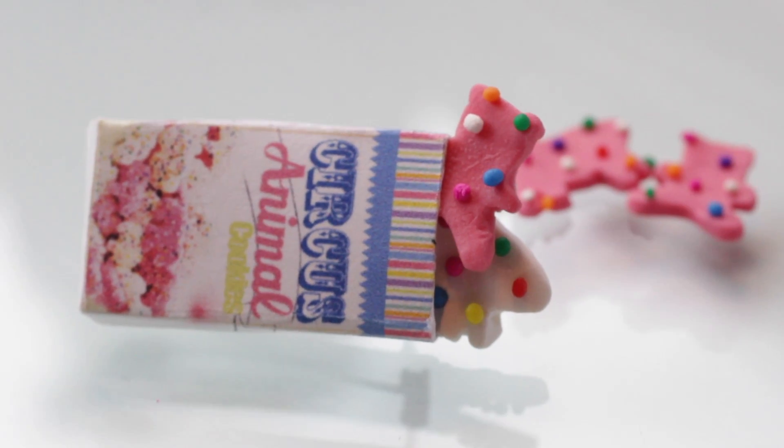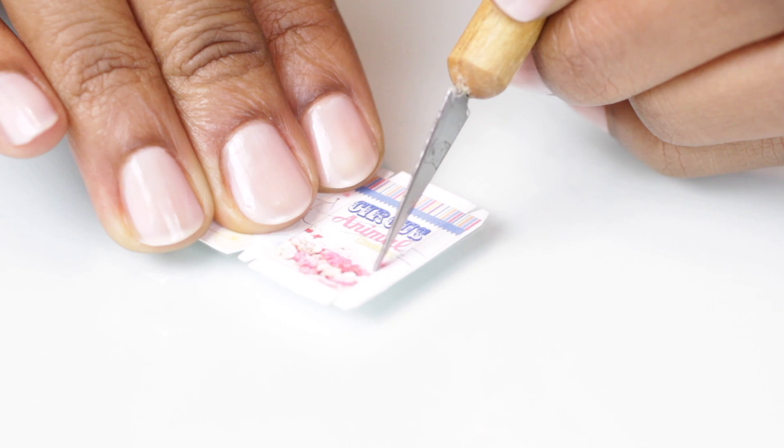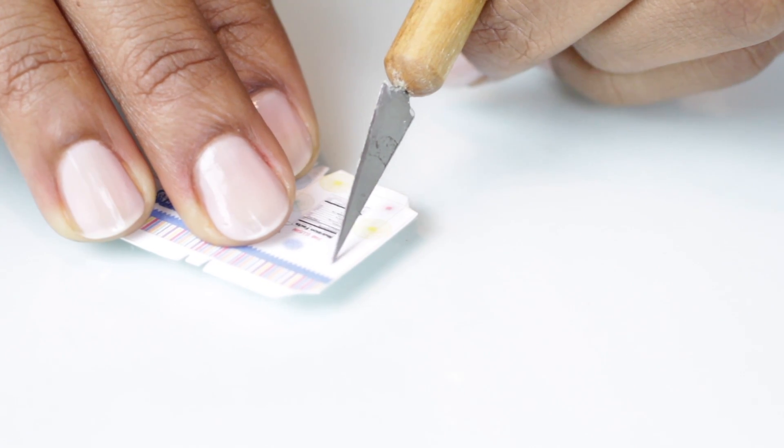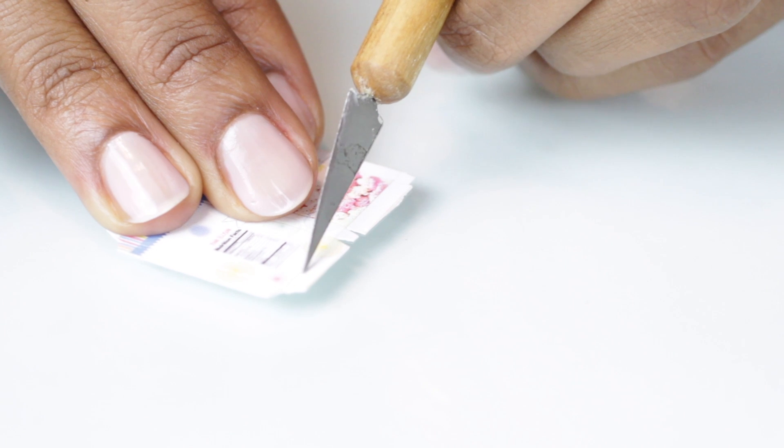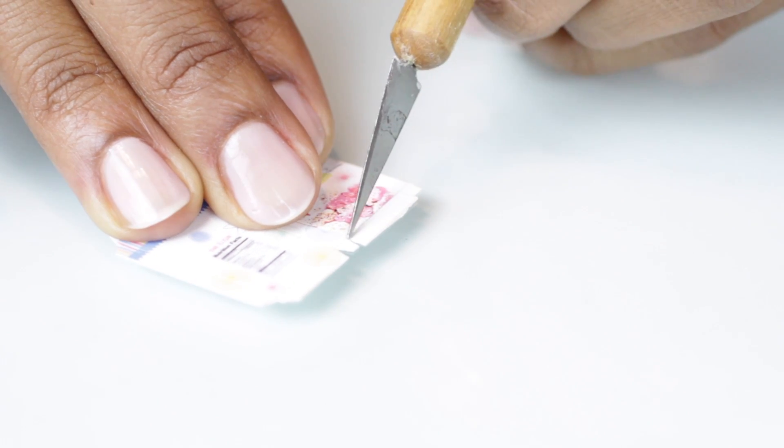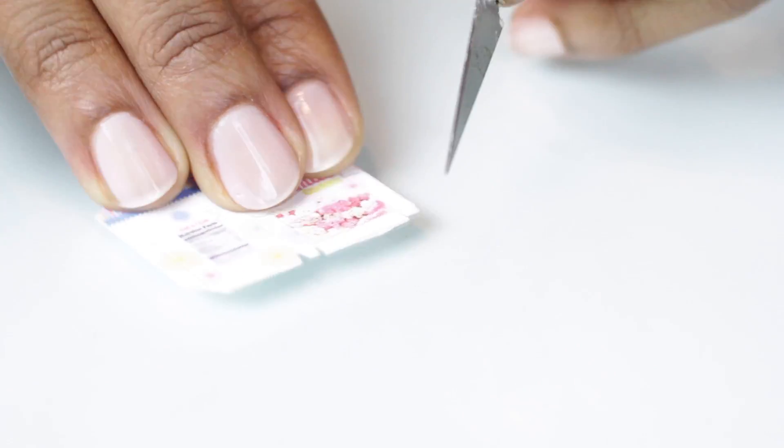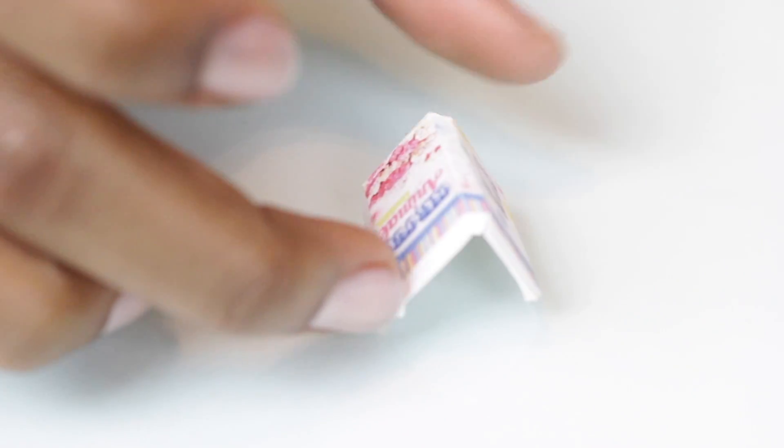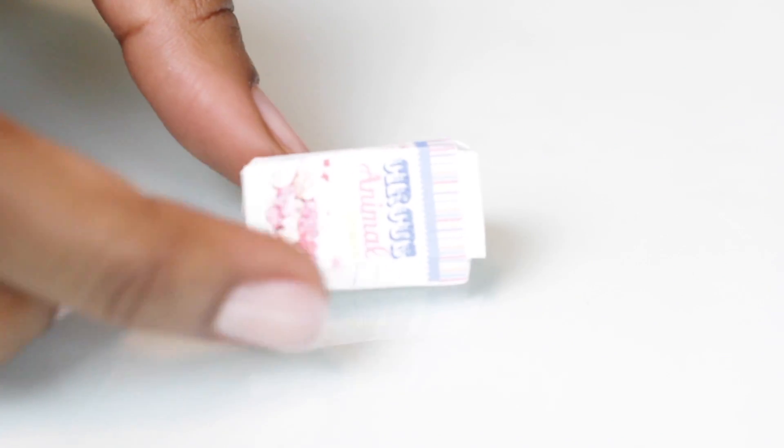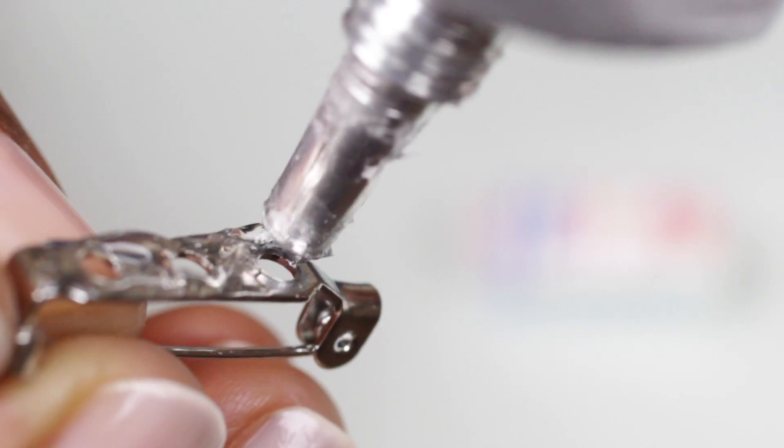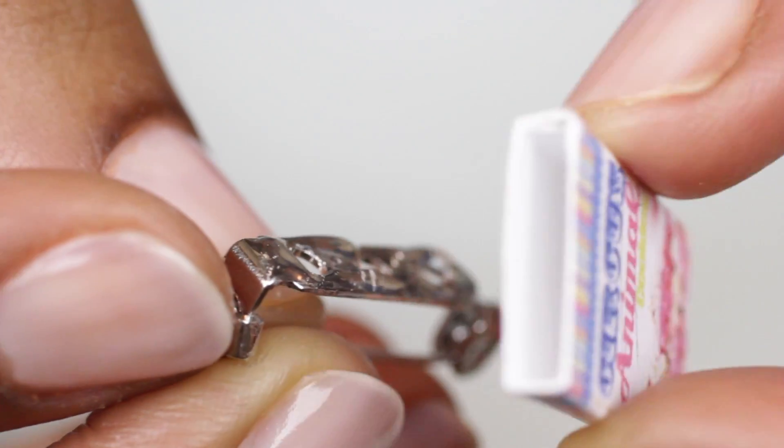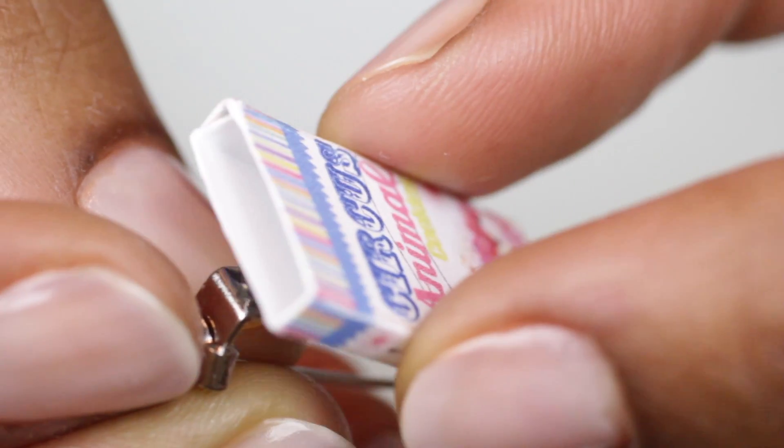So the same thing goes with the animal cookies. We're going to score the box and then fold those edges and glue the box together. I glued the box together and cut off the top so that you could see the cookies coming out or it was a little more exposed. And now I'm just going to glue the box that I already have completed onto the little brooch base.